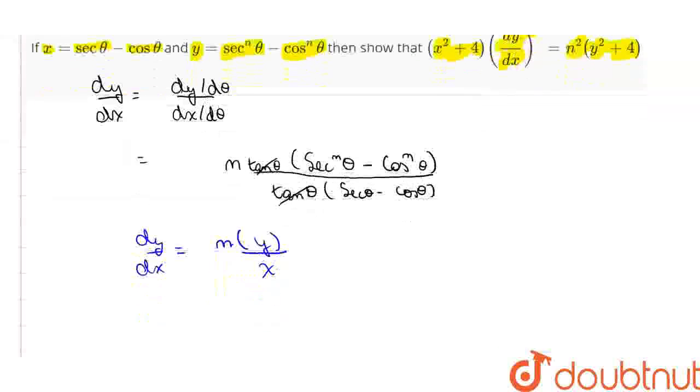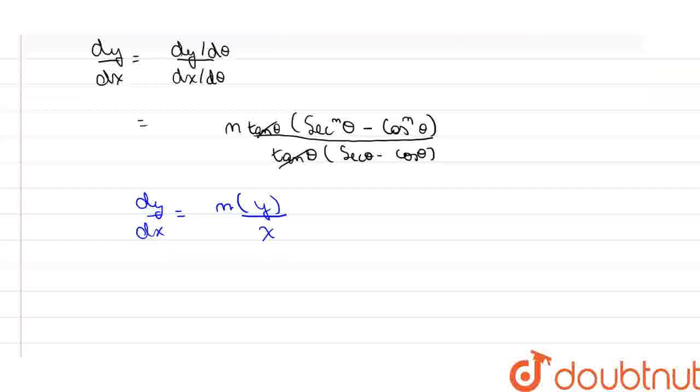Now, let us take the square of dy by dx. So, we get dy by dx whole square will be equal to n² into y² upon x².